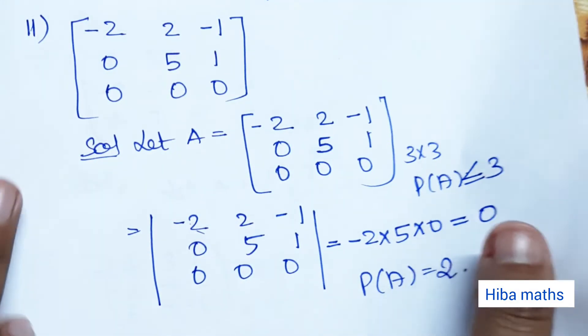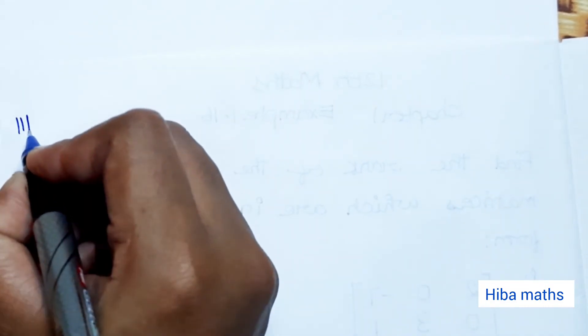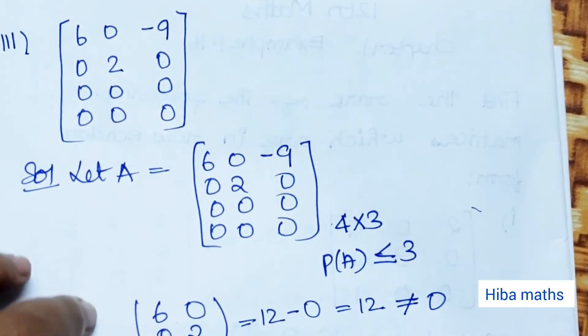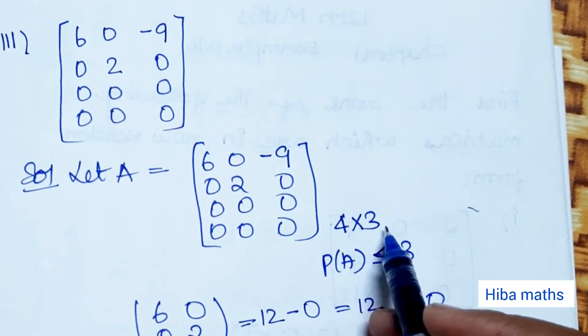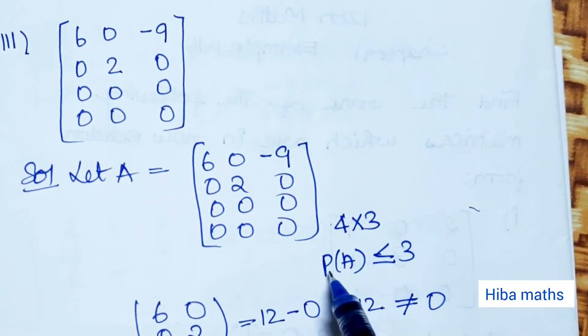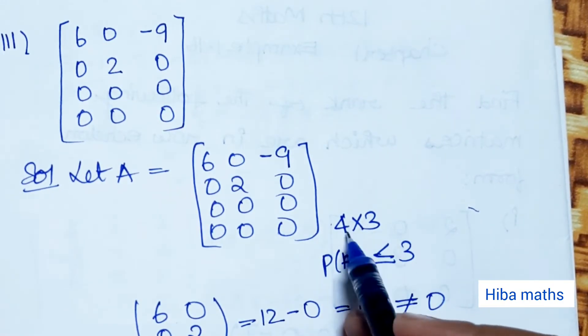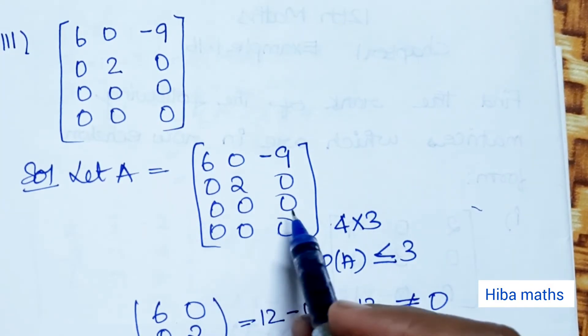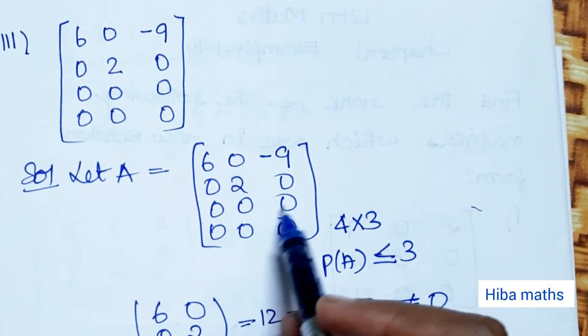For the third question, let A be a matrix with order 4 by 3, that is 4 rows and 3 columns. The rank of A is less than or equal to 3.